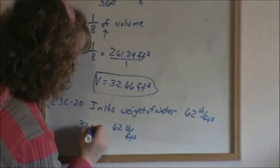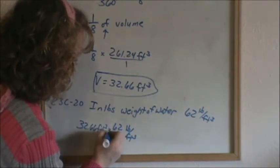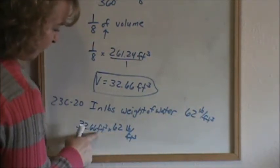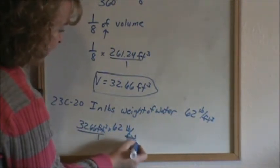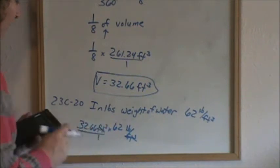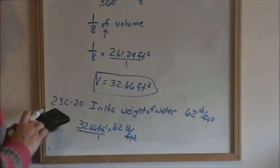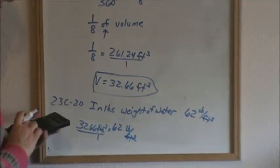32.66 cubic feet times that. You can see my cubic feet are going to cancel because that's in the numerator. This is in the denominator. And it's going to leave me pounds. And that's what I want to know because I want to know how much does the water weigh in pounds.